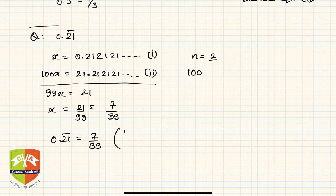So we successfully converted 0.21 bar into 7 upon 33 in the form of p by q. If three digits were repeating, you would multiply by 1000, and so on. I hope you understood the process and can now solve all such problems. In the next session, we'll take up a mixed non-terminating repeating decimal representation. Thank you.